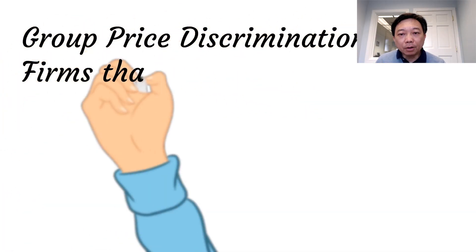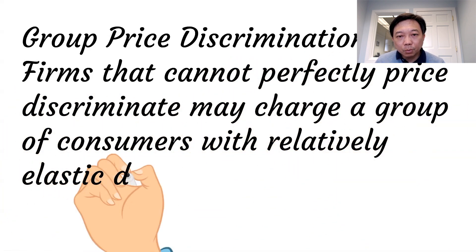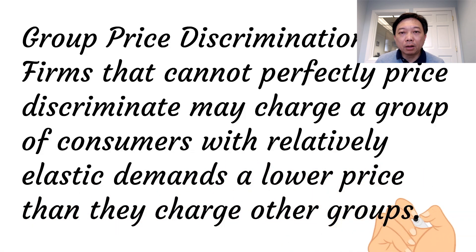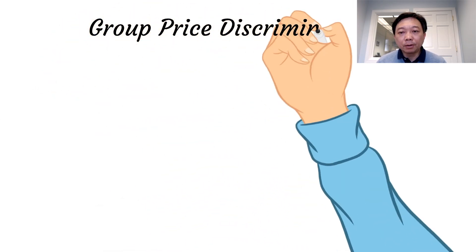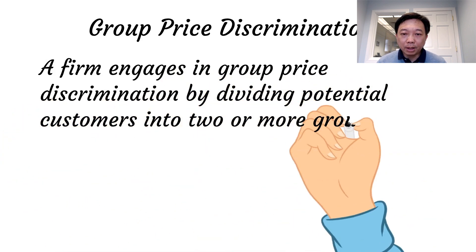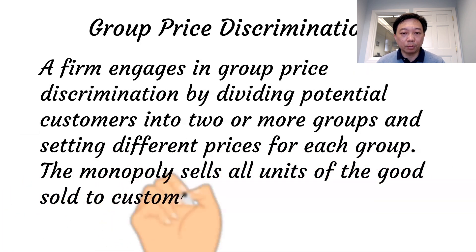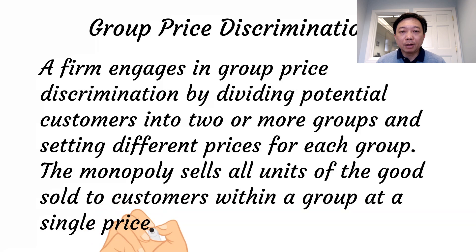Firms that cannot perfectly price discriminate may charge a group of consumers with relatively elastic demands a lower price than they charge other groups with relatively inelastic demands. A firm engages in group price discrimination by dividing potential customers into two or more groups and setting different prices for each group. Consumer groups may differ by age, such as adults and children, or by location, such as by country.